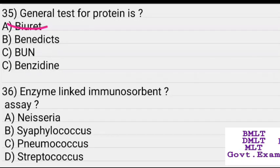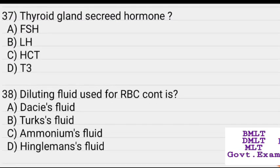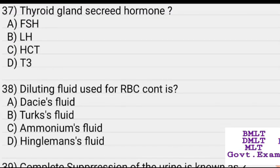ELISA stands for Enzyme-Linked Immunosorbent Assay. The thyroid gland secretes which hormone? Options: FSH, LH, SCT, T3. Answer: T3.